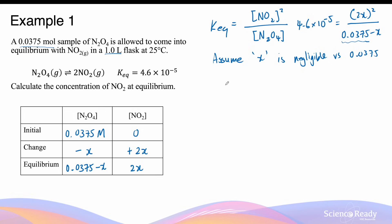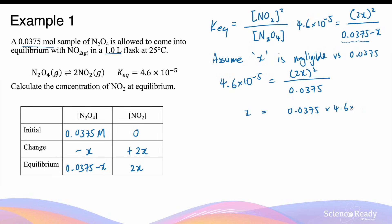Making this assumption simplifies the expression: the equilibrium constant equals (2x)² in the numerator divided by just 0.0375, since subtracting x makes very little difference when x is negligible. Solving for x: x equals the square root of (0.0375 × 4.6 × 10⁻⁵) divided by 2, which gives 6.6 × 10⁻⁴ mol/L.